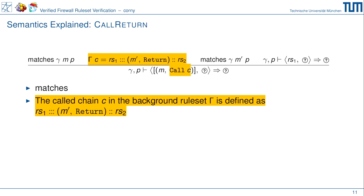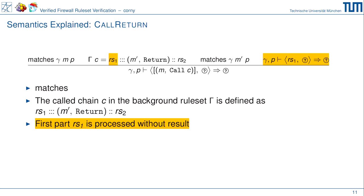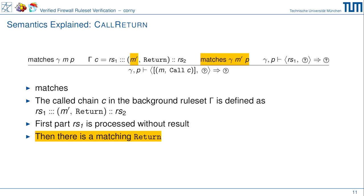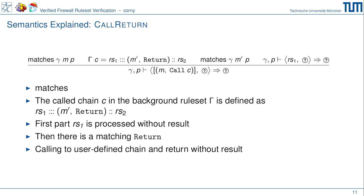Die benutzerdefinierte Kette besteht aus rs1, dann einer Regel m mit Aktion 'return', dann rs2. Die Kette hat also: einen beliebigen Präfix von Regeln (z.B. die Rate-Limiting-Regeln aus der dos_protect-Chain), dann eine Regel mit Aktion 'return', und dann potenziell weitere Regeln. Die nächste Vorbedingung: wir können den ersten Teil dieser Chain rs1 bearbeiten, ohne zu einer Entscheidung zu kommen. Dann matcht die Return-Regel m auf unser Paket — wir brechen die Chain ab, gehen zurück, und sind immer noch unentschieden.